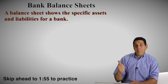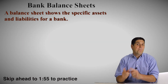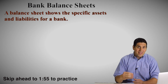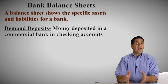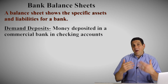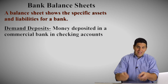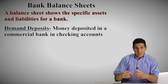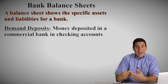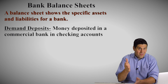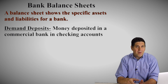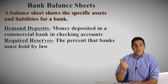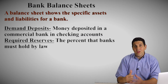First up, a few definitions. A bank balance sheet shows the assets and liabilities for a bank. Assets are the things that you own and liabilities are the things that the bank owes. Demand deposits is the money that people have deposited in the bank that the bank has to pay them back. So this for a bank is a liability — the money that people put in a bank has to be paid back. Now the bank is going to lend out some of that money, but they don't lend it all out. They have to hold some in reserves. That's called required reserves — it's the amount the bank has to hold by law.